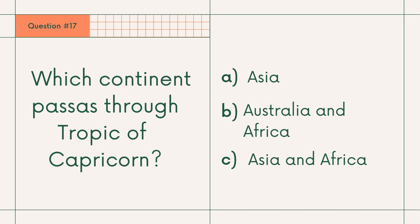Question 17: Which continent passes through the Tropic of Capricorn? A. Asia, B. Australia and Africa, or C. Asia and Africa. Answer: B. Australia and Africa.